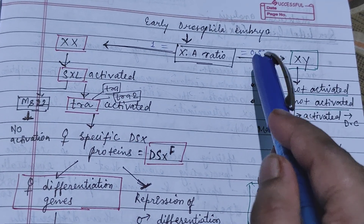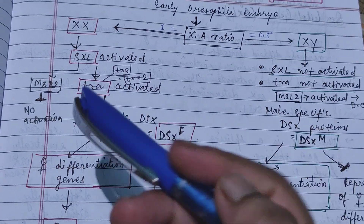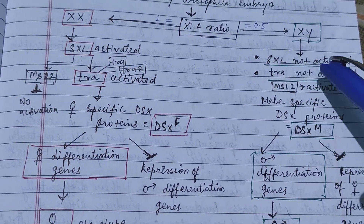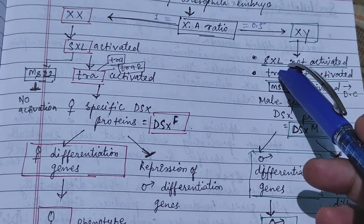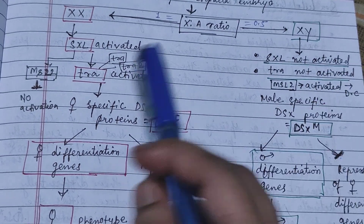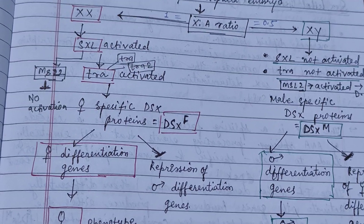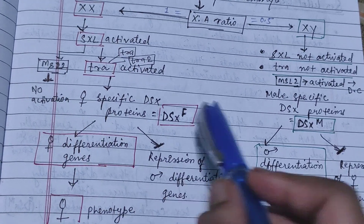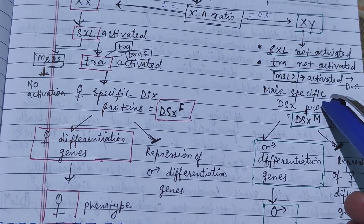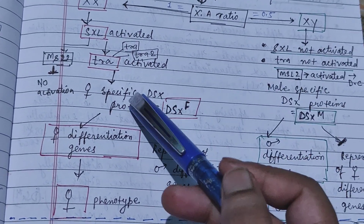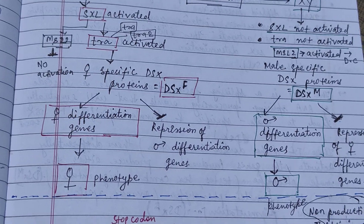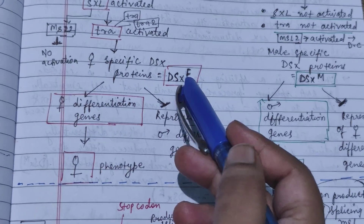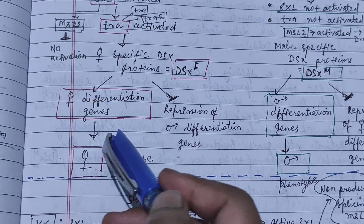If the X:A ratio is 1, it leads to female; if it is 0.5, it leads to male. The Sxl gene is functional in females and not activated in males. In females, Sxl is activated and MSL2 is not activated. In males, Sxl is not activated and MSL2 is activated, which leads to dosage compensation. Then tra is activated, and tra and tra-2 are also activated, leading to the female-specific DSX protein, DSXF.